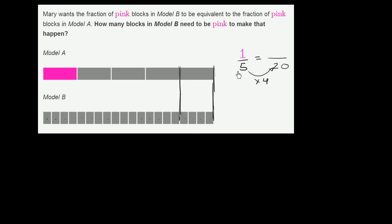So one block in Model A that is pink would be the same thing as four blocks in Model B. We would literally just multiply this times four. So four of the 20 will need to be made pink. So one, two, three, four.